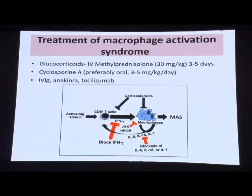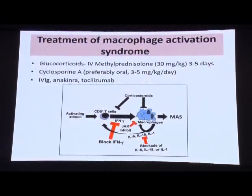The therapeutic approach includes IV methylprednisolone for 5 days followed by oral prednisolone, cyclosporine A for refractory MAS at 3–5 mg/kg/day, and intravenous immunoglobulin when infection is suspected. Anakinra (not available in India) and tocilizumab have been found useful in case reports. The newer drugs on the block are anti-interferon gamma therapy, JAK inhibitors, and anti-IL-18 agents.